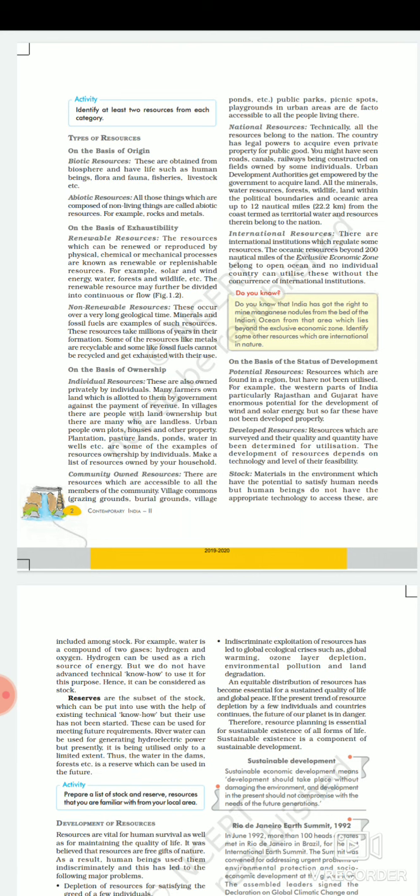Ab jaivik aur ajaivik sansadhan kya hote hain? To jaivik sansadhan — un sansadhanon ki prapti jivmandal se hoti hai, inme jivan vyapt hota hai, jaise ki manushya, vanaspati jat, prani jagat, matsya jivan, pasudhan — ye sare jaivik sansadhan hue. Aur ajaiv, yani ki abiotic — ve sare sansadhan jo non-living cheezom se bane hote hain, jaise rocks, metals, pathhar — ye sare abiotic sansadhan hain.